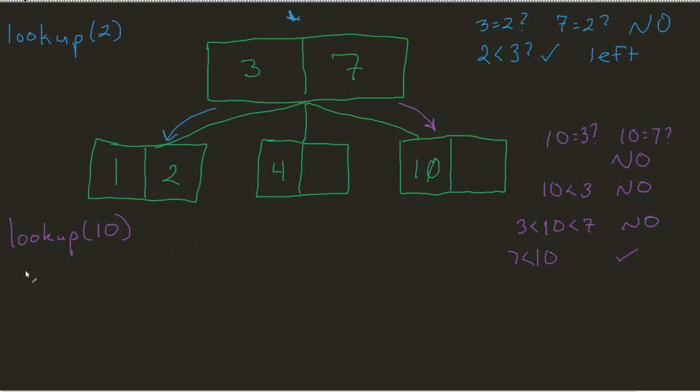So as you can kind of guess, if I made one final lookup, let's say, for example, I did lookup on that 4, same principles come into play. Is 4 equal to 3? No. Is 4 equal to 7? No. Is 4 less than 3? Nope.